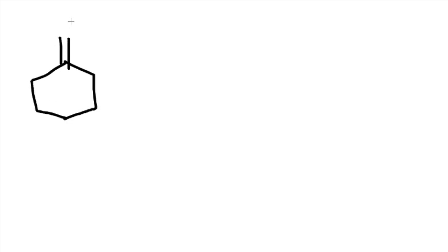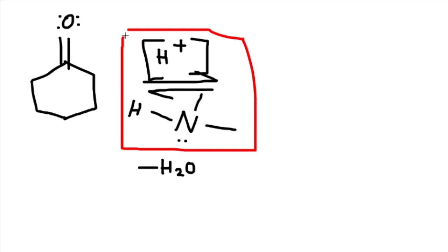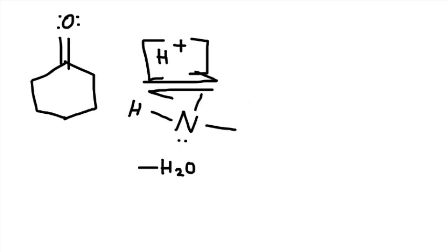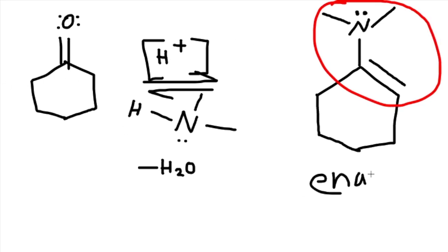Let's do an example. If we add this ring structure and we have a ketone — this works for ketones and aldehydes — we're in acidic conditions and we add this secondary amine. Secondary means we have two carbons attached to a nitrogen, and we have lost water. Where the oxygen was, we put the nitrogen with a single bond. We put the double bond on the bottom to make the enamine, not on the nitrogen.